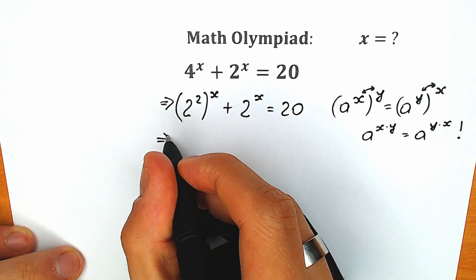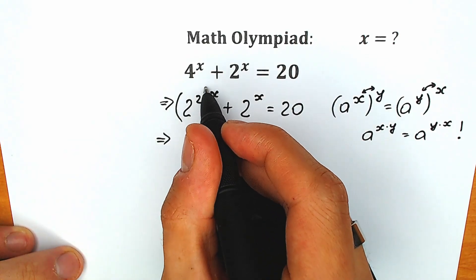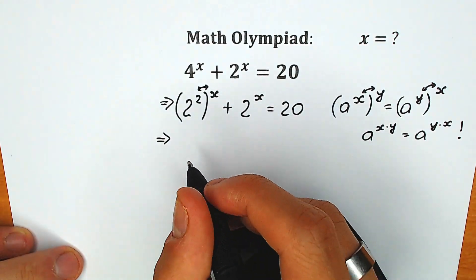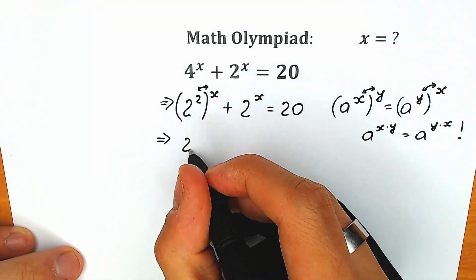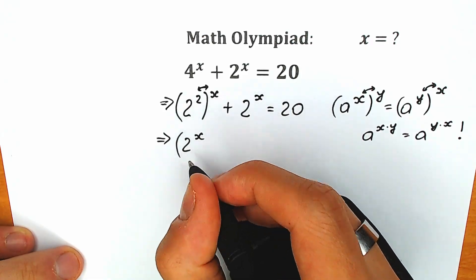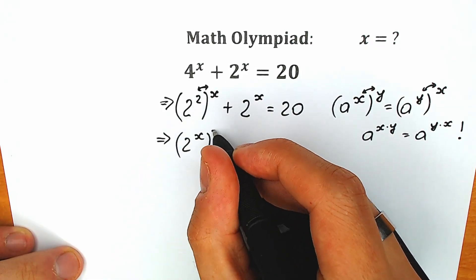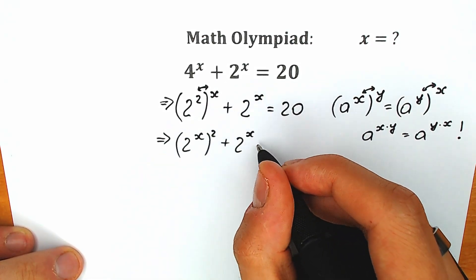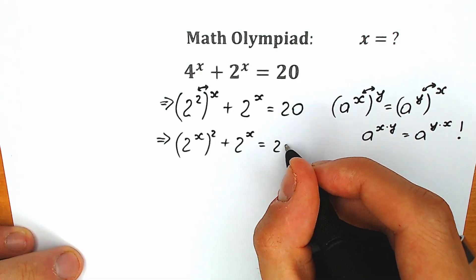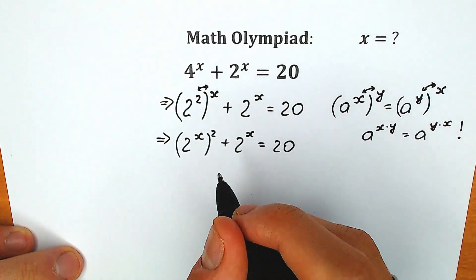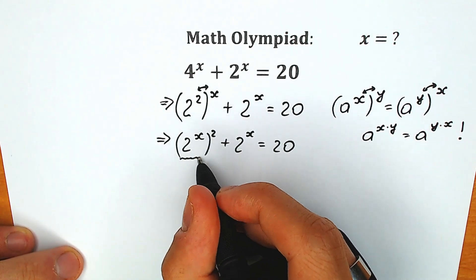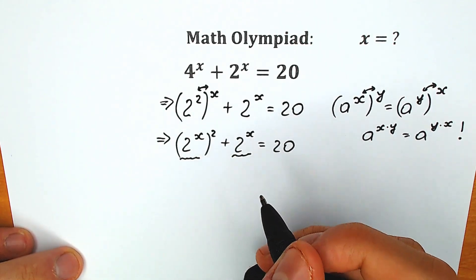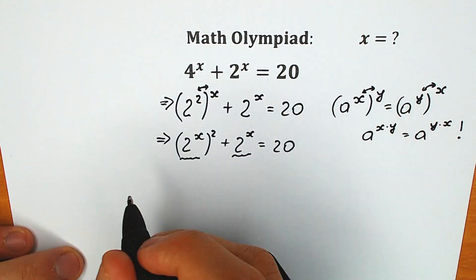So right now let's do this. Let's change these two — we're going to swap the 2 and this x. As a result, we have 2 to the power x inside, and 2 outside. So we have (2 to the power x) squared, plus 2 to the power x, equal to 20. Right now the key moment: we have 2 to the power x in both terms, so we can easily write a substitution.